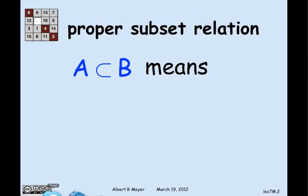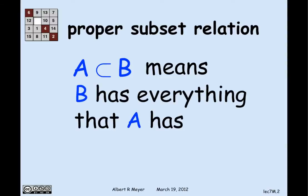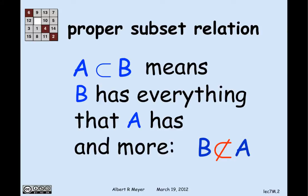Let's look at that example. I'm interested in the proper subset relation. A is a proper subset of B, which means that B has everything in it that A has and something extra. So in particular, since B has something extra, B is not a subset of A, certainly not a proper subset of A.